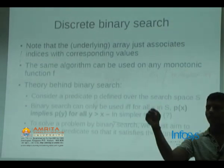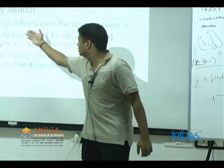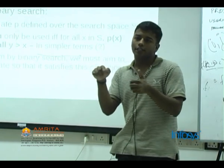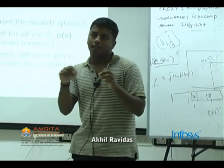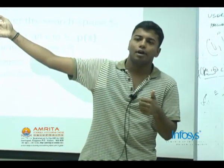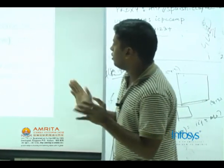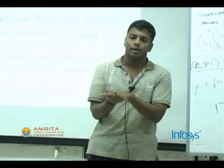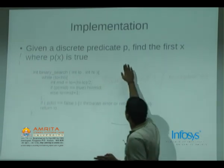In the array representation, the predicate would be: is the number less than or equal to x? We define a predicate p over the search space S such that p holds the property: if p returns true for x, it should return true for every y greater than x. For example, if A[10] is greater than 20 returns true, then it should return true for A[11], A[12], and all remaining elements. To solve a problem by binary search, we must design a predicate that allows us to formulate the problem in these terms.